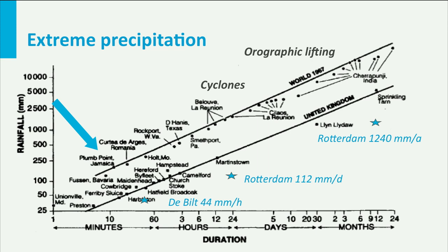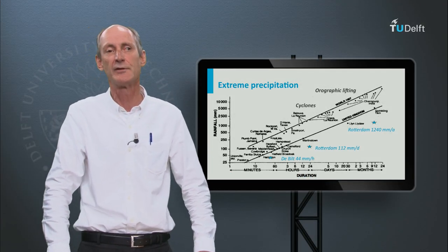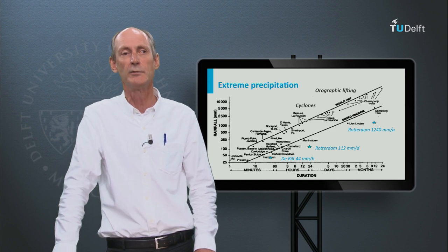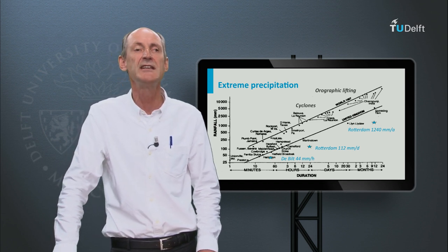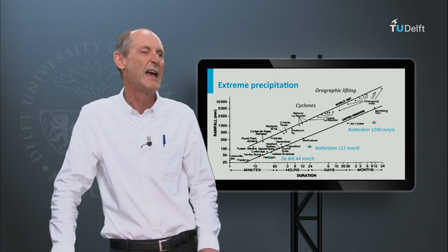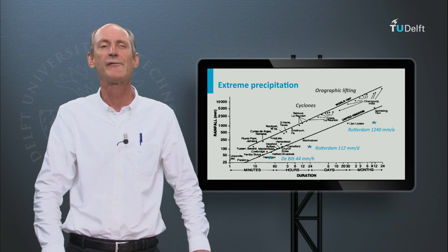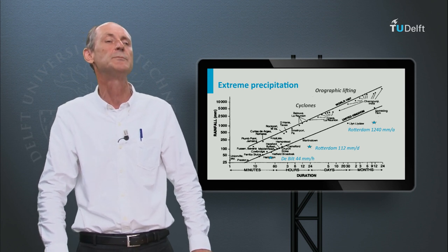Of course, not all places in the world can have these records. The second line corresponds with the records of UK rainfall. And in the Netherlands, where I am from, we have very modest amounts of rainfall compared to other places in the world, indicated by the stars. Yet I have the feeling that it rains a lot here in the Netherlands. We have 180 rain days per year.